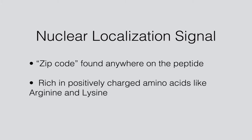Proteins destined for the nucleus are marked with a nuclear localization signal, a zip code sequence located anywhere on the peptide that is rich in positively charged amino acids like arginine and lysine.